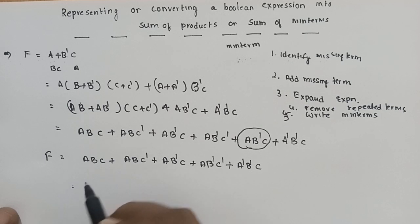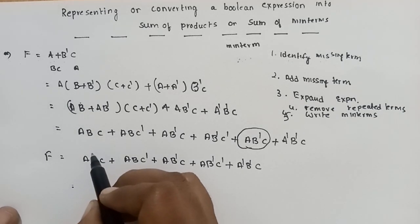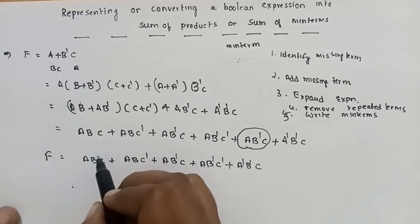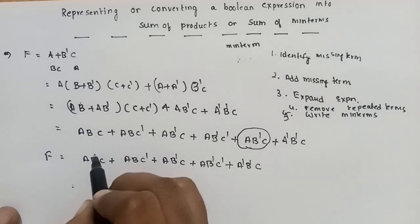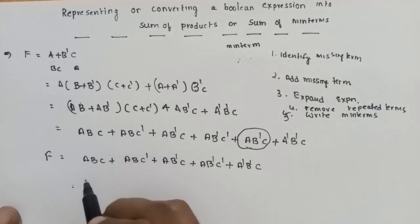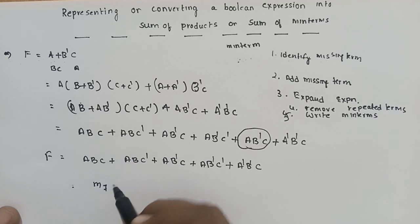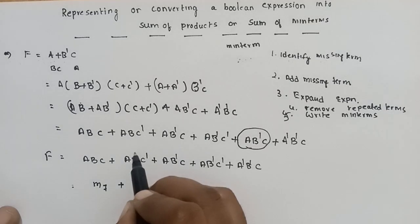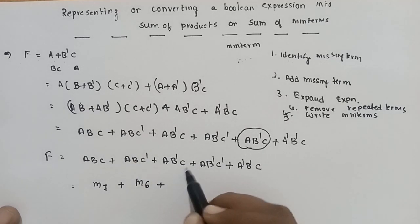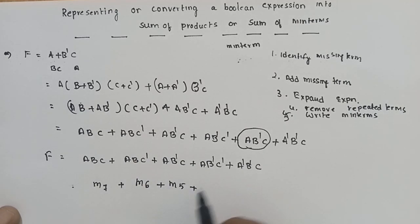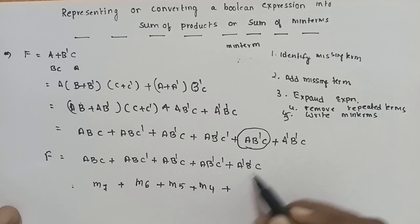Minterms: A equals 1, A dash equals 0. So A, B, C equals 1, 1, 1 — that is M7. Plus M6, plus M5, plus M4.